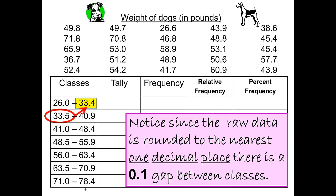Again, look at the gap between the beginning of class 2 and the end of class 1. There's a tenth or 0.1 gap between those, between 33.5 and 33.4. You add 0.1 to get between those.